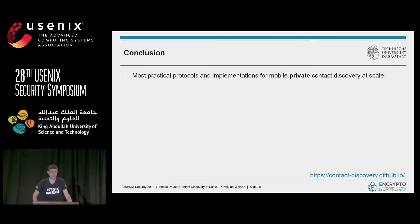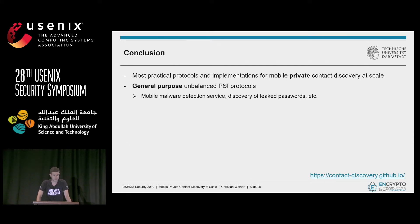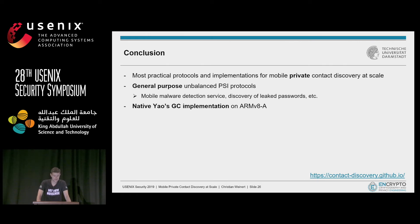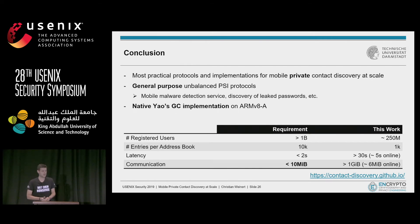In conclusion, we've presented the currently most practical protocols and implementations for mobile private contact discovery. The protocols are not only suitable for contact discovery but are general-purpose unbalanced PSI protocols — they could be used for mobile malware detection and discovery of leaked passwords, just to give some examples. Our native implementations of Yao's GC protocol on ARMv8 can be useful for many future secure computation applications on mobile devices. However, we contacted one of the services on our survey list and asked about chances for real-world deployment. Unfortunately, they gave us quite demanding requirements, with the maximum allowed communication being the biggest issue, so we cannot meet these requirements yet — and I encourage everyone to look into this important research area.